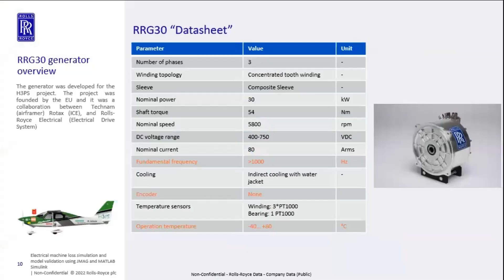A quick overview of the reference machine, developed by Rolls-Royce Electrical. The application is a parallel hybrid aircraft designed by Tecnam, who was also responsible for system installation. The internal combustion engine was provided by Rotax, and Rolls-Royce was responsible for the whole electrical system including the electrical machine, power electronics, and battery. The machine is a three-phase permanent magnet synchronous machine with a large number of poles to reduce mass, with a fundamental frequency above 1000 Hz. It has a composite sleeve on the rotor, iron-cobalt magnets, no encoder to reduce system complexity, and must cover a relatively large operating temperature range.